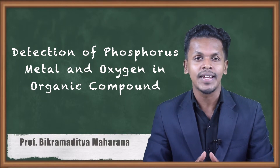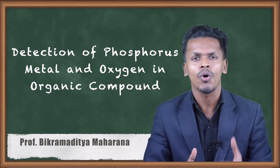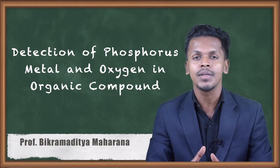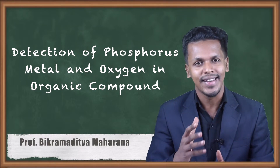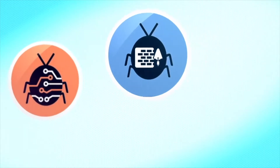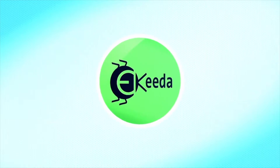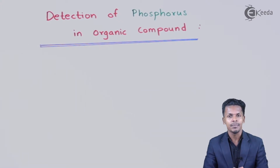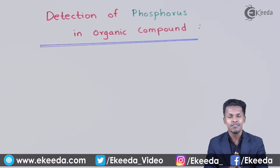Hello friends. In the previous lecture we understood how to estimate the percentage of nitrogen, carbon, hydrogen, and various other elements present in an organic compound. Now in this topic we are going to discuss how to determine the percentage of phosphorus in a particular organic compound. There are two methods we will use to estimate the percentage of phosphorus.